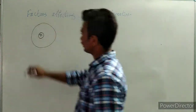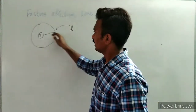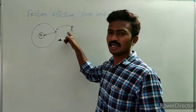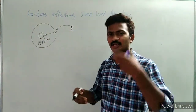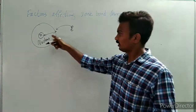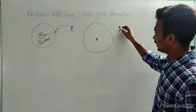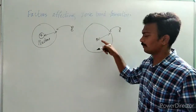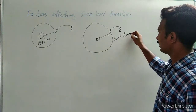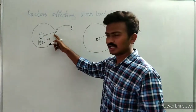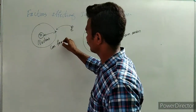If an atom is having a bigger size and an incoming electron enters into its shell, the attraction between the nucleus and the incoming electron should be greater — then only it can form an anion. If the atom is very big in size, then the incoming electron will not be attracted much by the nucleus, so it cannot form an anion.